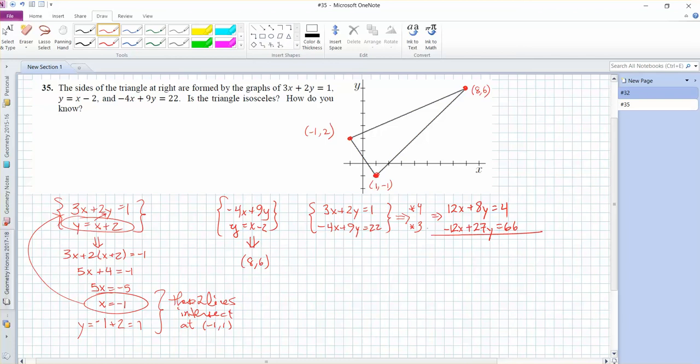And then if I add straight down, the x's cancel. The y's turn into 35y. Constants added up, it's 70. So y ends up being 2. And you can take that 2 and plug it into either of the original equations to get your x value. So like 3x plus 2 times 2 equals 1.